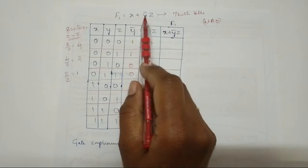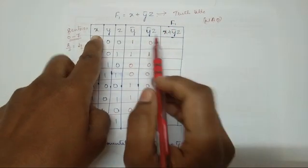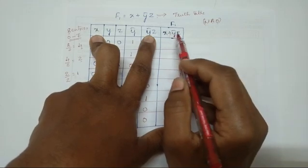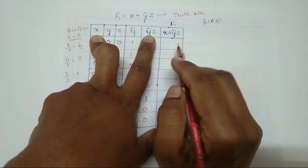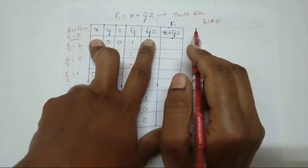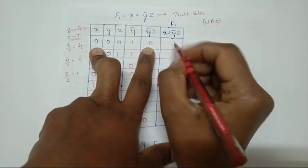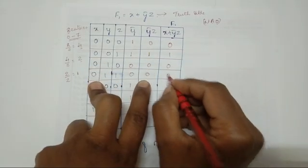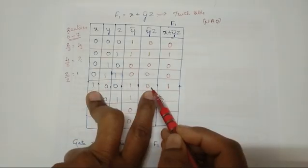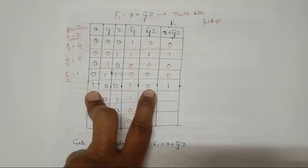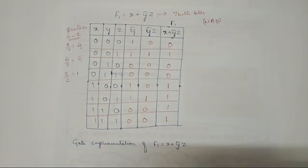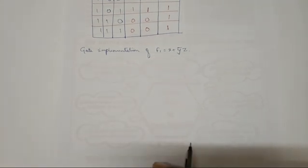Next, applying the OR gate for x + y̅z: we look at the x column and the y̅z column. In OR, if any one input is 1, the output is 1; only when all inputs are 0 do we write 0. Checking each row: 0, 1, 0, 1, 1, 1, 0, 1. This completes the truth table.